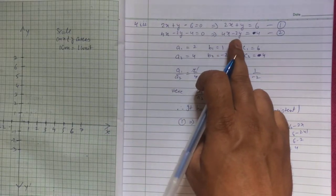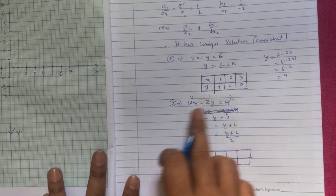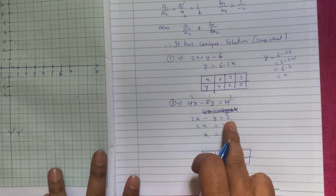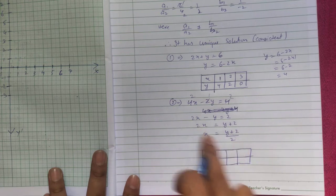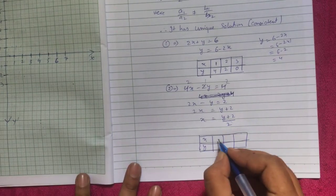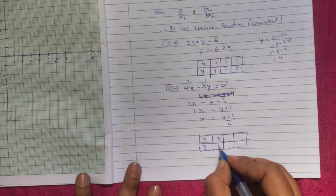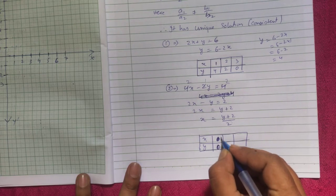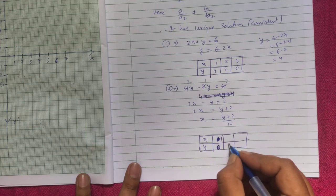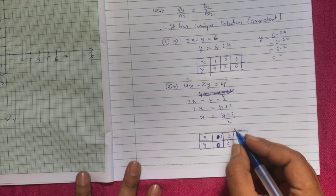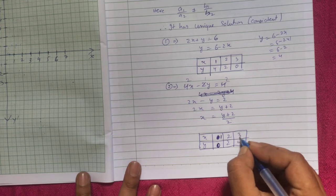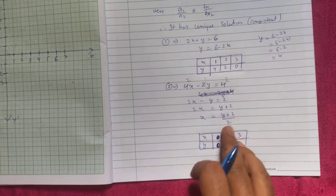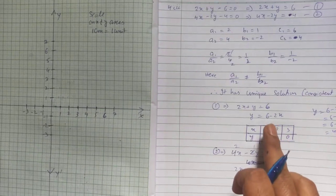For the second equation: 4x - 2y = 4. Dividing throughout by 2 gives 2x - y = 2, so x = (y + 2)/2. If y=0, x=1. If y=2, x=2. If y=4, x = (4+2)/2 = 3.